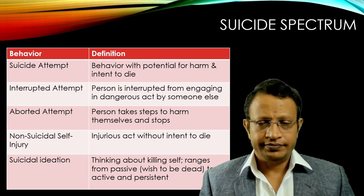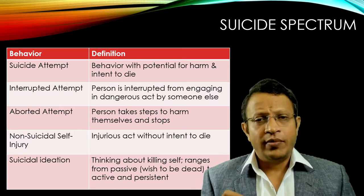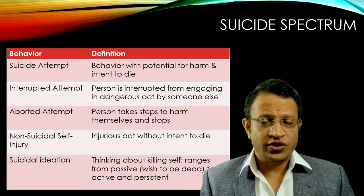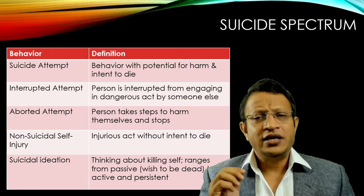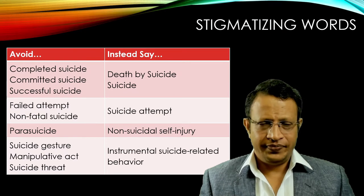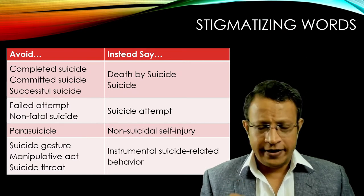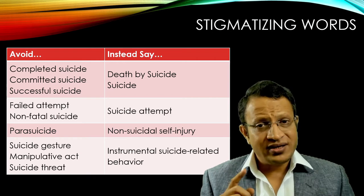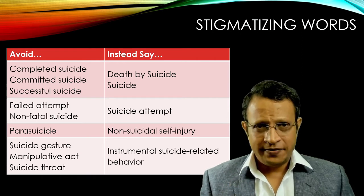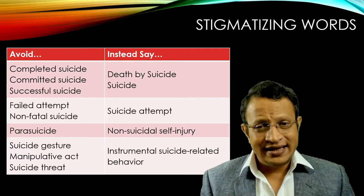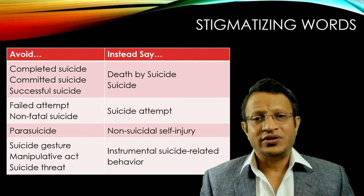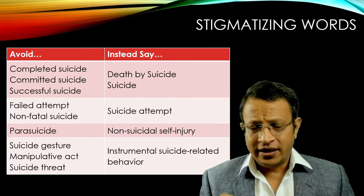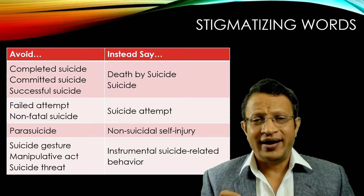The final one is suicidal ideation — a thought process of thinking about killing oneself. It ranges from passive thoughts like 'wish I would have been dead' to active persistent ideas. We need to be careful with terminology because the word suicide has negative connotation and is stigmatizing. We should avoid 'completed suicide,' 'committed suicide,' and 'successful suicide' — these are highly stigmatizing. Instead, use 'death by suicide.' Also, 'failed attempt' or 'non-fatal suicide' should be avoided; use 'suicide attempt' instead.